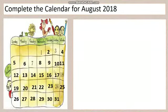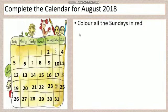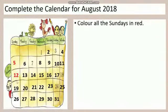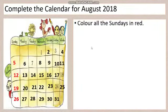First, you have to complete the missing date numbers on the calendar. Now answer the following questions. First question: color all the Sundays in red. The Sundays are 5, 12, 19, and 26. All these Sundays — fill in those boxes with red color.